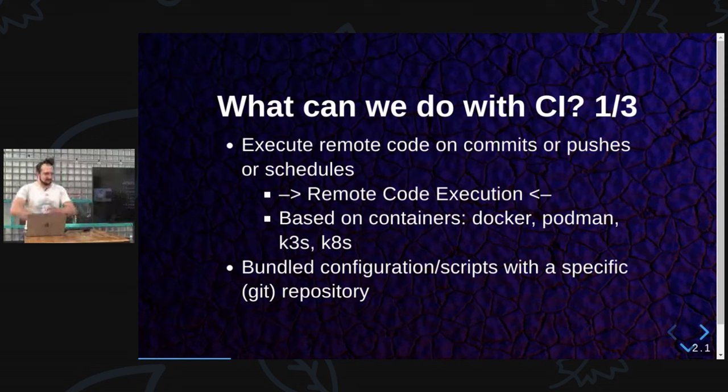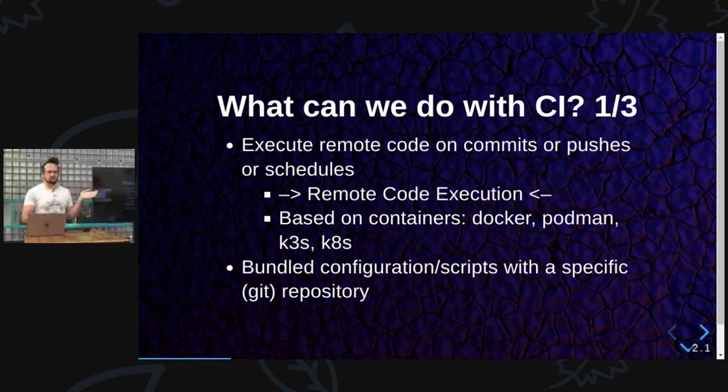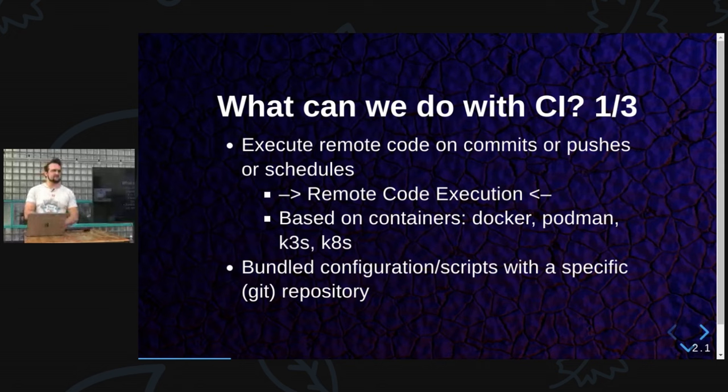Continuous integration, CI, is basically a thing to execute code on another machine. That's why I highlighted it here — it's a remote code execution. Very important. If you give access to someone to your CI, your CI will just run with the same privileges all over again. Like we had with the Lambda cache attacks, where someone figured out that /tmp is read-writable for all the Lambda functions and you can read stuff from other customers. Same is true for continuous integration if it's not set up properly.